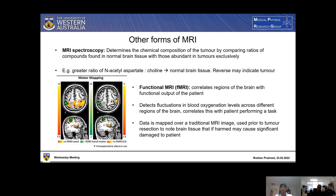Functional MRIs may also be used in this process. They correlate regions of the brain with the functional output on the patient by detecting fluctuations in blood oxygenation levels across different areas and correlating this with a patient instructed to perform a particular task — such as moving a hand, a leg, or in the case of a patient with an aptitude like playing the violin, performing that task during the scan to identify areas responsible for that motor output. This data is mapped over a traditional MRI image, used prior to tumor resection or radiotherapeutic removal to identify specific areas of brain tissue that, if harmed, could cause significant damage to the patient's day-to-day functionality.